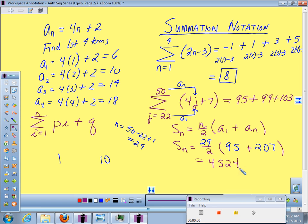I have a different answer than you did. Did I copy the wrong problem? 29 over 2 times... I got 4379. 95 plus 207 is 302, 302 times 29 divided by 2. What is it? 4379. How long has that been incorrect? I'm recording now, right? Yes, I am. All right, we're good.